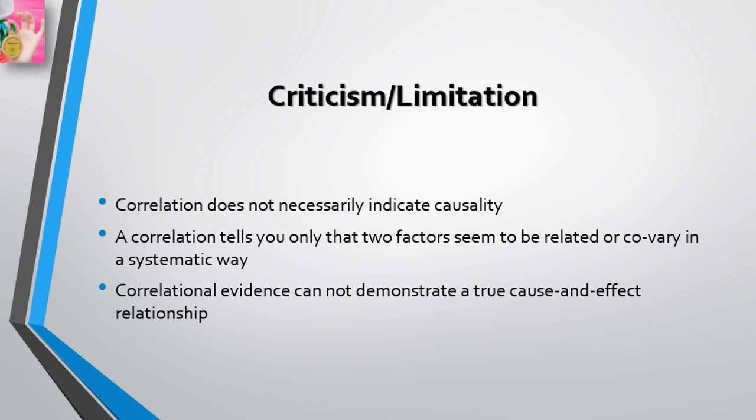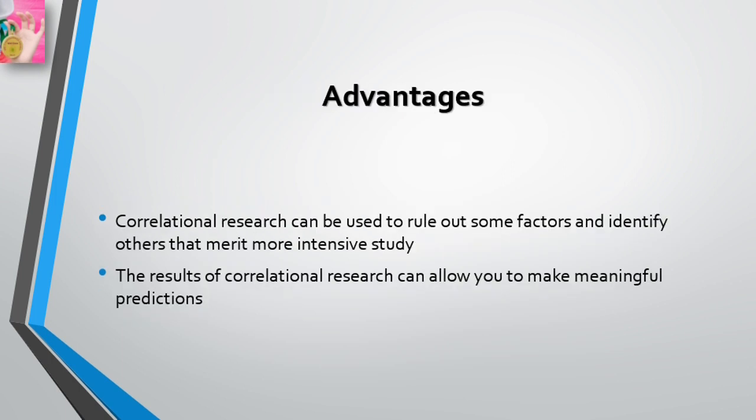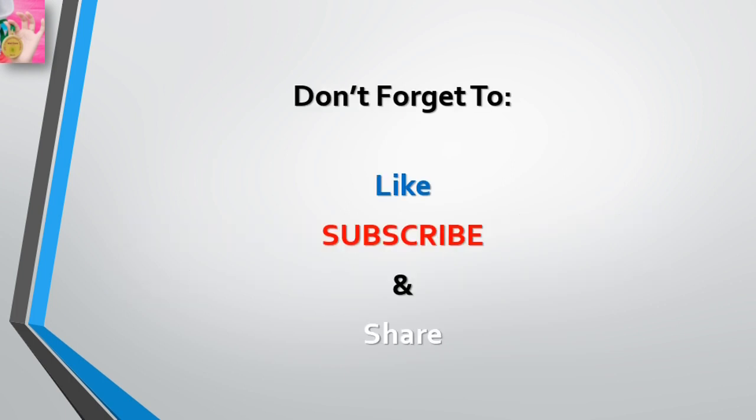The critical point is that even if two factors are very strongly correlated, correlation does not necessarily indicate causality. A correlation tells you only that two factors seem to be related or co-vary in a systematic way. Although correlational evidence cannot demonstrate a true cause-and-effect relationship, correlational research is still very valuable for two reasons: first, it can be used to rule out some factors and identify others that merit more intensive study; and second, the results can allow you to make meaningful predictions.